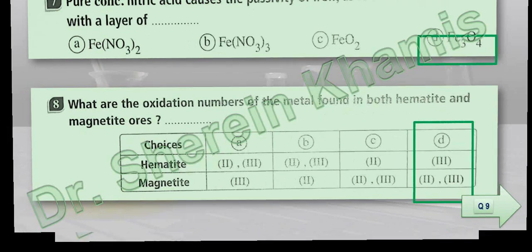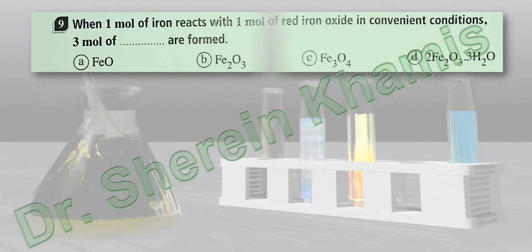Question number nine says that when one mole of iron reacts with one mole of red iron oxide under covalent conditions, three moles of what are formed? Here we want to get three moles of what will be forming. Red iron oxide will form iron(II) oxide only.